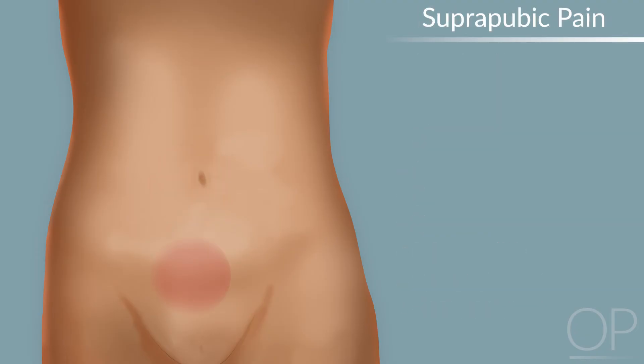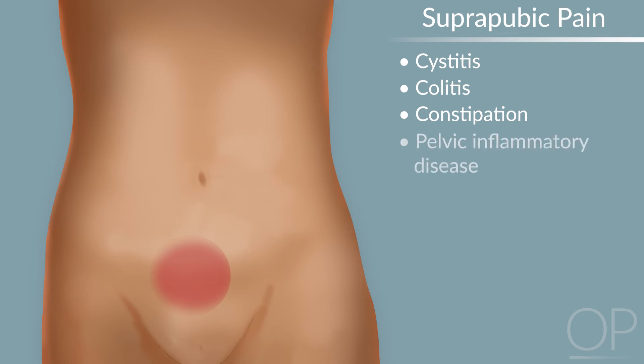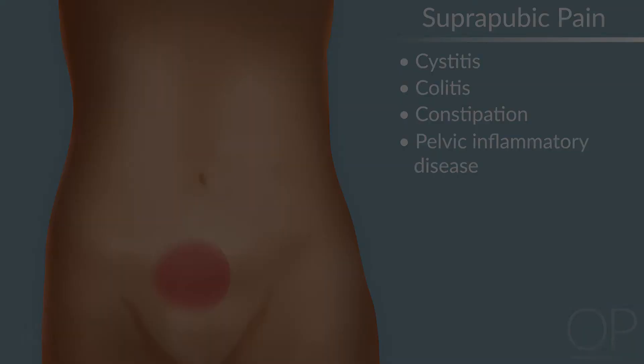Pain overlying the bladder is typically attributed to cystitis but may be due to colitis or constipation. In sexually active female adolescents, pelvic inflammatory disease must also be considered.